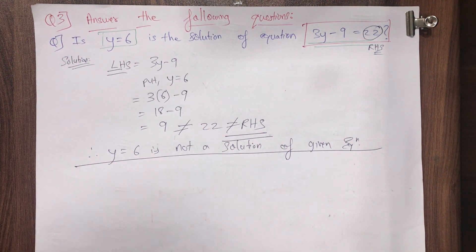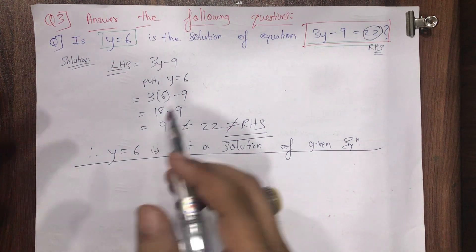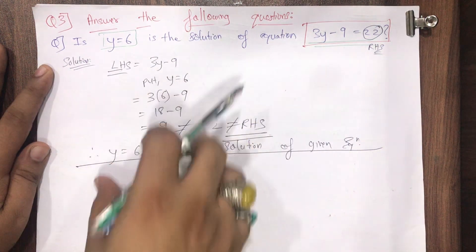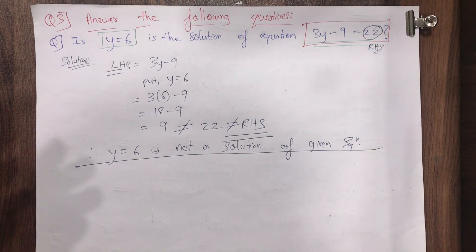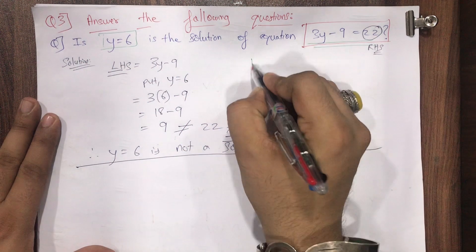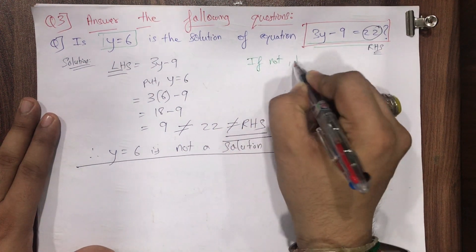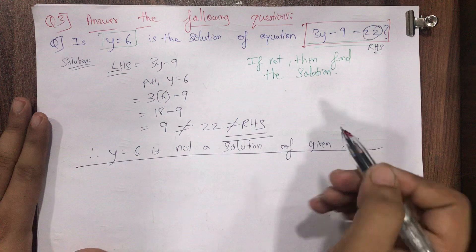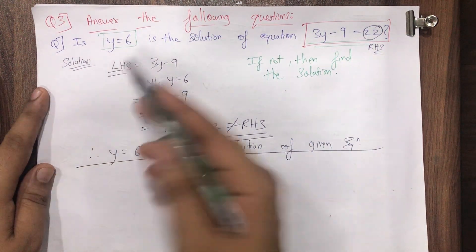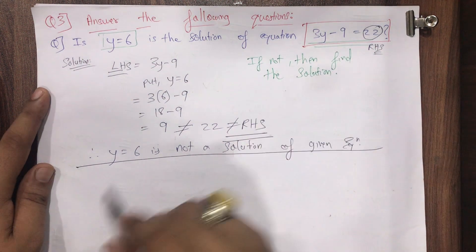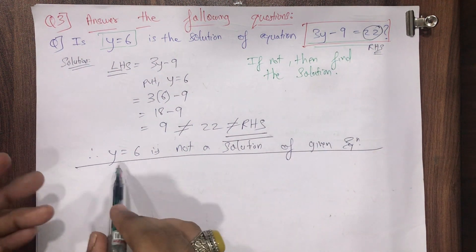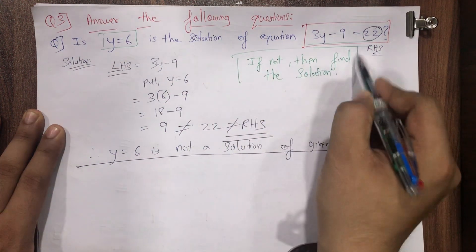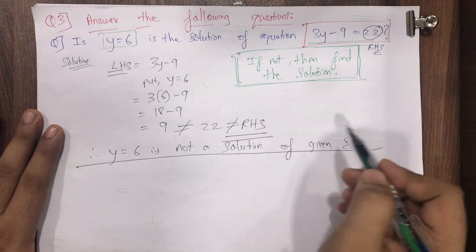The question ends here, but in an exam we can also extend this question: check whether y equals 6 is a solution of the given equation or not — and if not, then find the solution. That means if y equals 6 does not happen to be the solution of the given equation, then you find the actual solution. In this case y equals 6 is not the solution because left hand side is not equal to right hand side, so now we have to find the real solution.